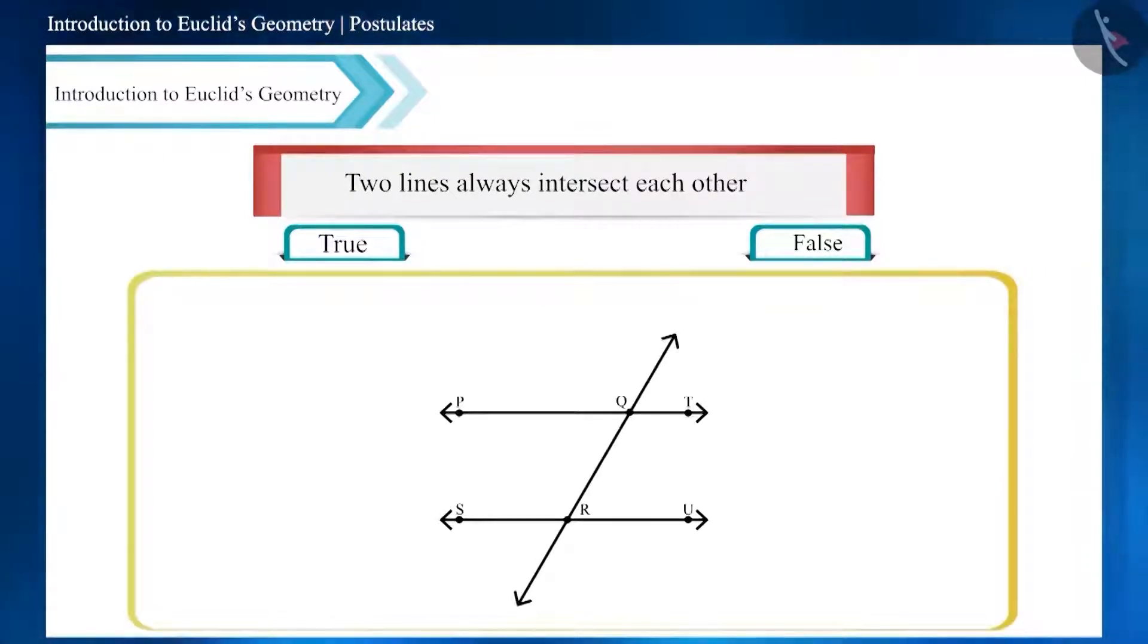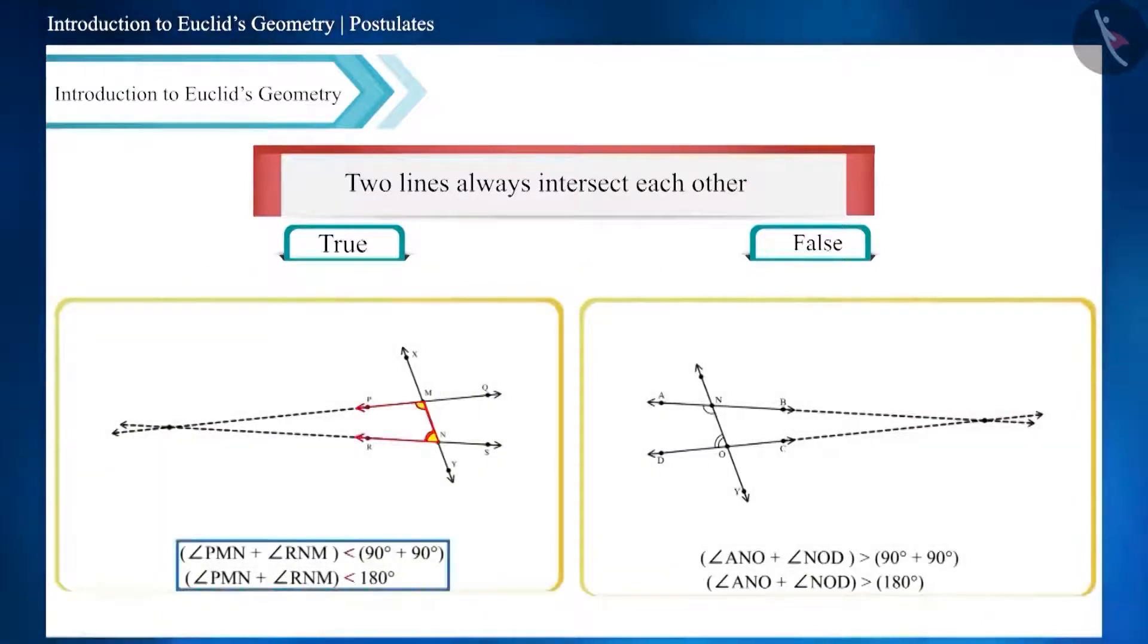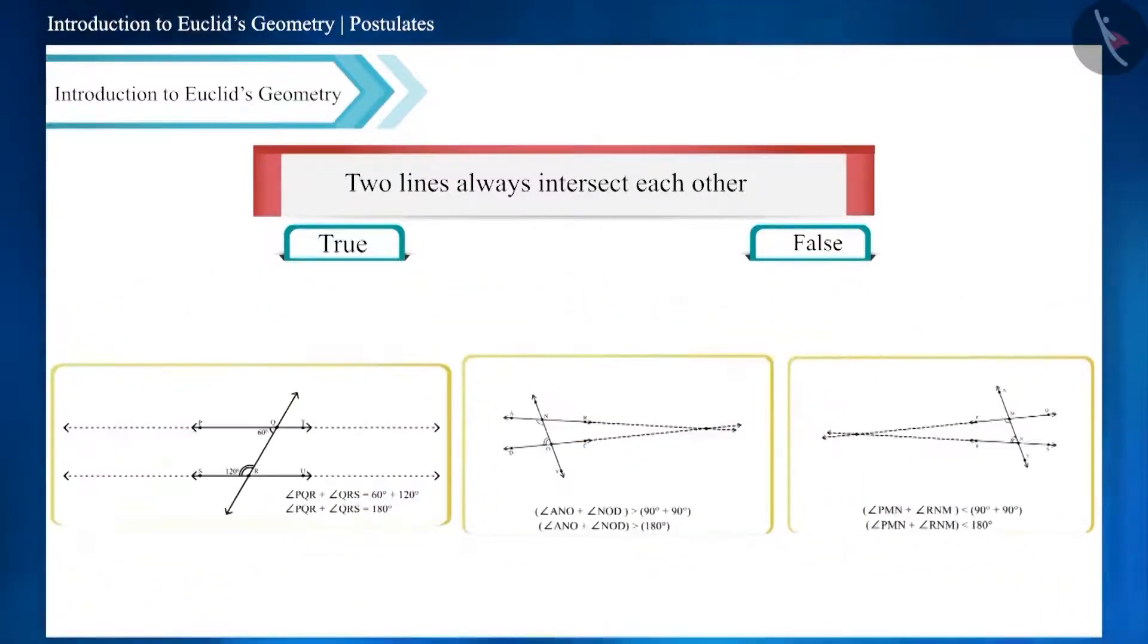makes the interior angles on the same side of it, and if the sum of angles is 180 degree, that is two right angles, then the two straight lines will be parallel to each other. And if the sum of interior angles is less or greater than 180 degree, then the lines will be intersected. Therefore this statement is false.